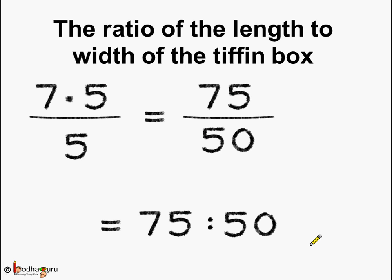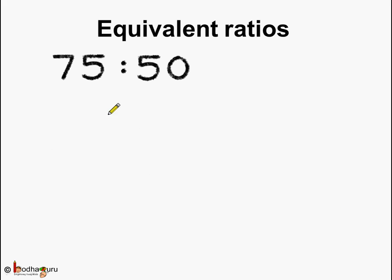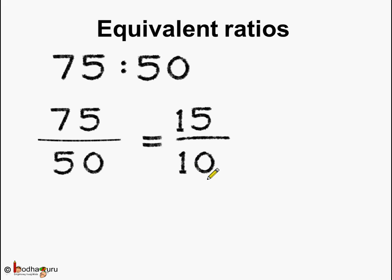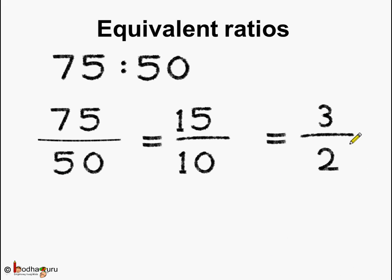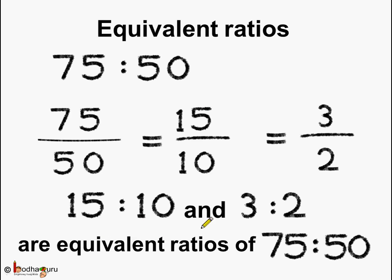Can we find the equivalent ratios of 75 is to 50? Yes, we can. We write it as 75 divided by 50. This is one equivalent ratio which we can get by dividing by 5: 5 ones are 5, 5 fives are 25, so we get 15 in the numerator. Dividing the denominator also by 5, we get 5 tens are 50, so the denominator becomes 10. This is another equivalent ratio. We can get more equivalent ratios, such as 3 by 2. We divide both the numerator and the denominator by 5: 5 threes are 15, 5 twos are 10. So we can say 15 is to 10 and 3 is to 2 are the equivalent ratios of 75 is to 50.